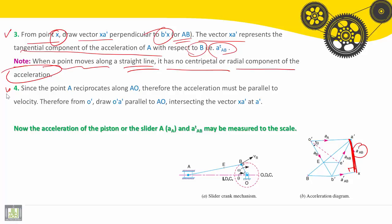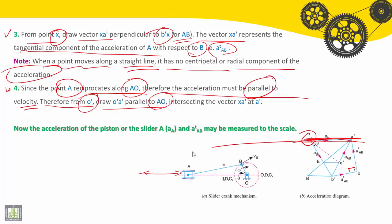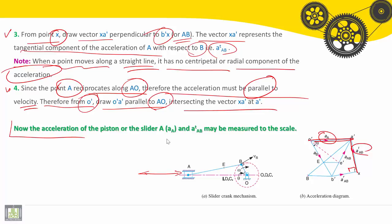Step number four: since the point A reciprocates along AO, therefore the acceleration must be parallel to the velocity. So the velocity of A is in this case horizontal. With reciprocating motion, therefore from O dash, draw the parallel to AO — it will be horizontal — intersecting with X A dash in A dash. Now we find A dash, and then we can measure at the scale ATAB and AA. The acceleration of the piston or the slider A, and ATAB may be measured to the scale.